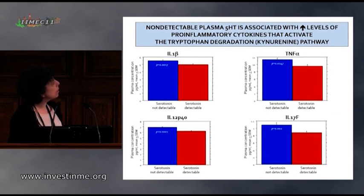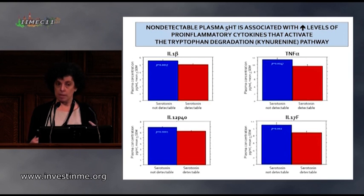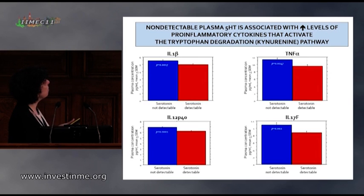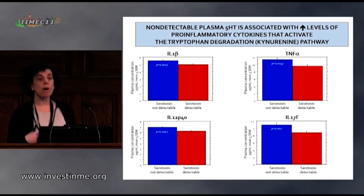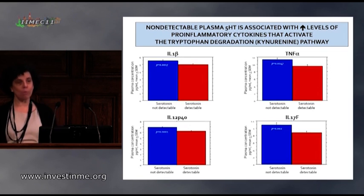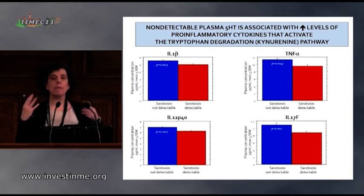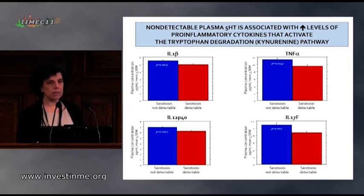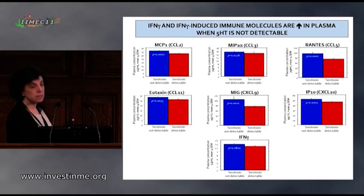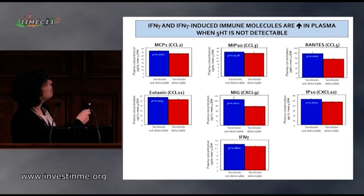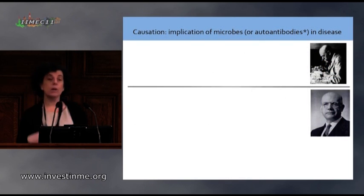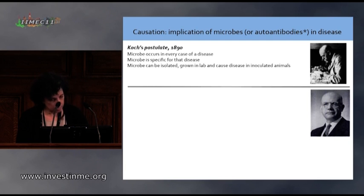Looking closely at metabolites across our entire population of cases and controls together, we found that when serotonin was not detectable, there was an increase in all pro-inflammatory cytokines responsible for triggering the tryptophan degradation pathway — which takes tryptophan away from serotonin synthesis, making it more likely that serotonin will be undetectable. These things are making sense. Similarly, interferon gamma, a potent inducer of the tryptophan degradation pathway, and associated chemokines are also increased when serotonin is not detectable.